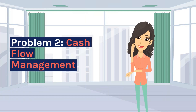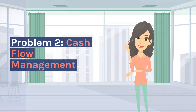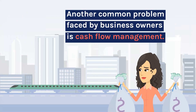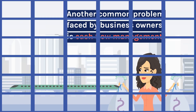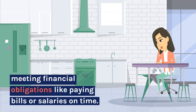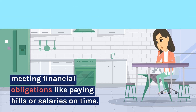Problem 2: Cash Flow Management. Another common problem faced by business owners is cash flow management. Failing to track income and expenses accurately, or overextending your budget, could lead to difficulties in meeting financial obligations like paying bills or salaries on time.